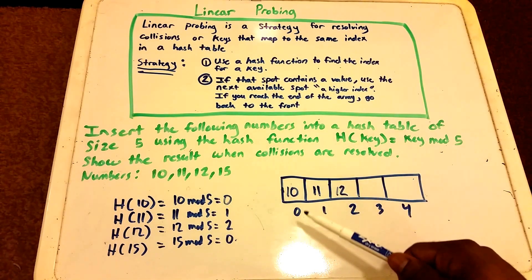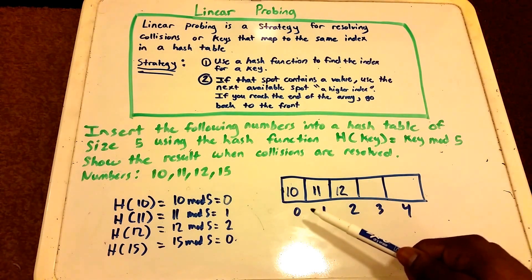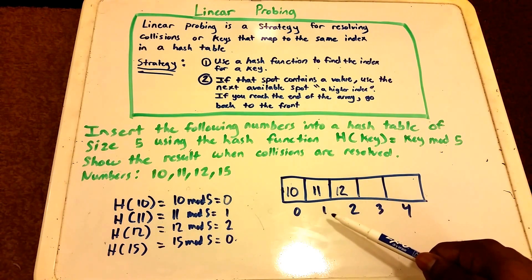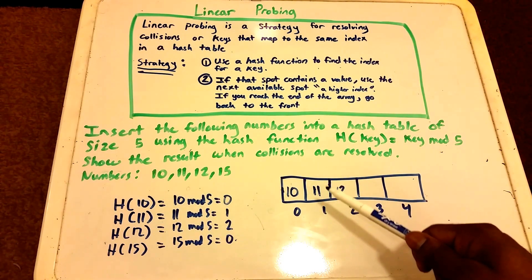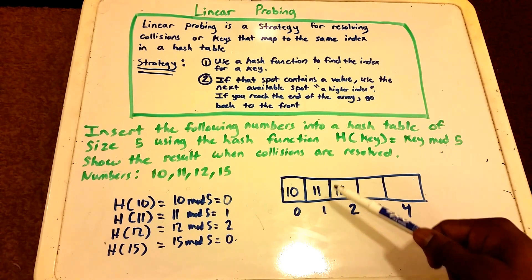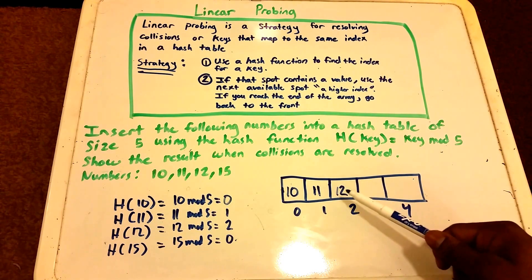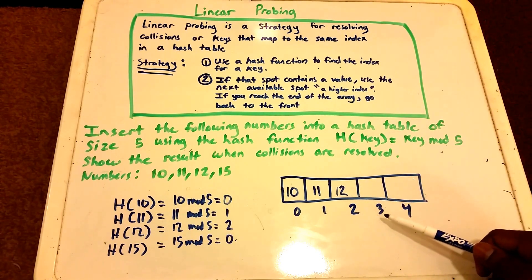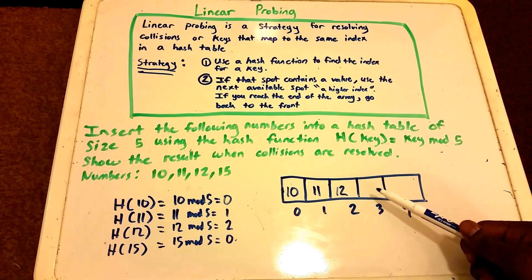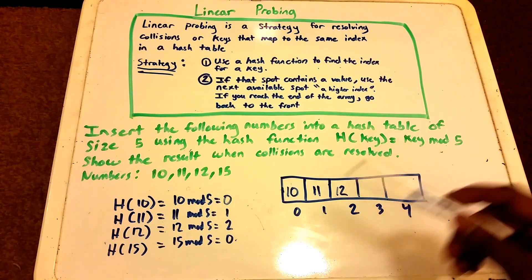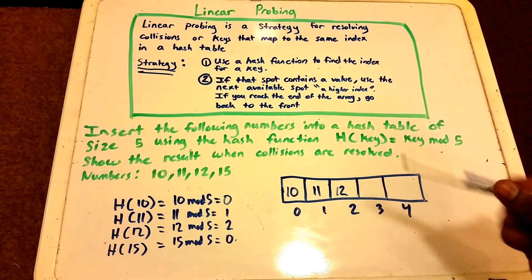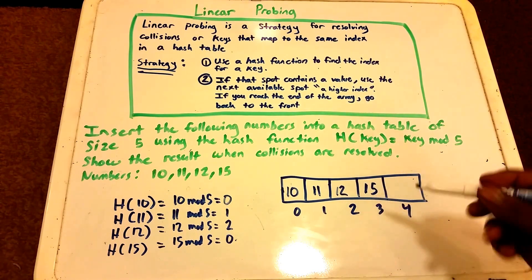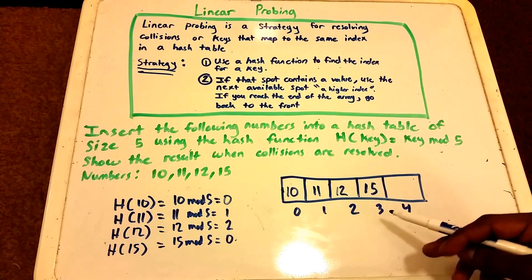We have the value 0 here for the index. We want to use the next available spot, that will be index 1 and we can see that it already contains the value 11. So we go to the next index which would be index 2 and we see that it already contains the value 12. Now we go to index 3, we see that doesn't contain a value so we can put our key in that new spot there. So we put our key which is 15 into index 3.